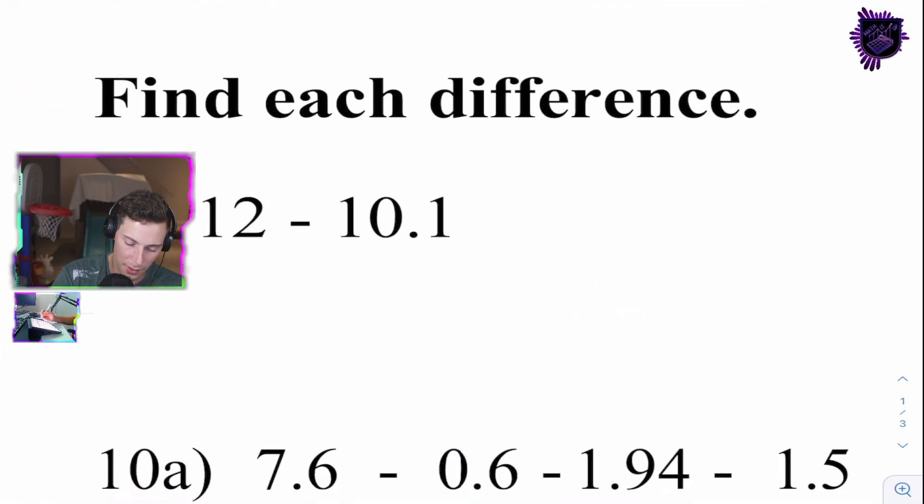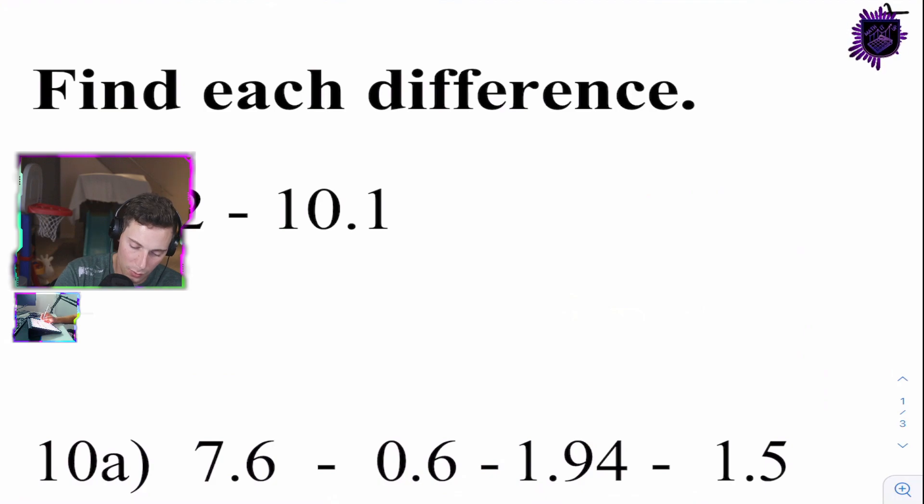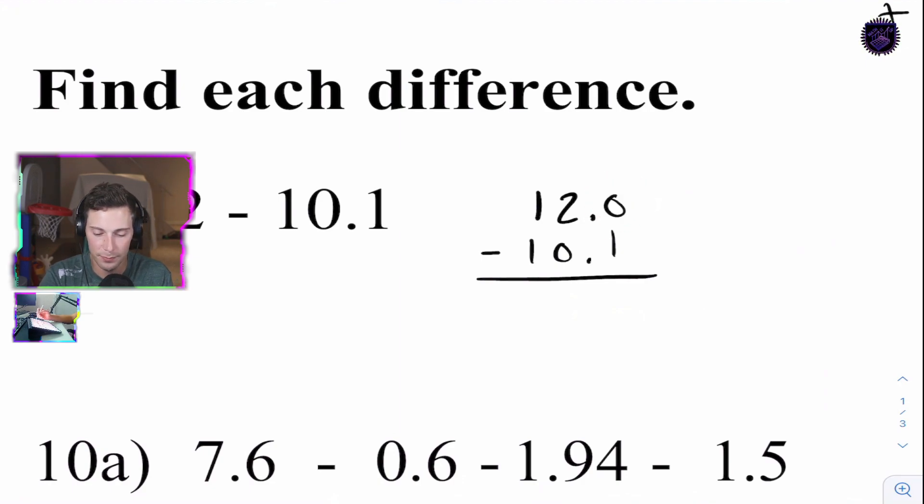Subtraction. Always fun. Going to be some borrowing. 12 minus 10.1. If you notice, I added a 0 in this placeholder here. In this placeholder here, so I could line up all of my digits, all of my place value. So, 0 minus 1. I'm going to have to borrow. That'll become 1. That'll become 10. 9. 1. 0. My answer will be 1.9.